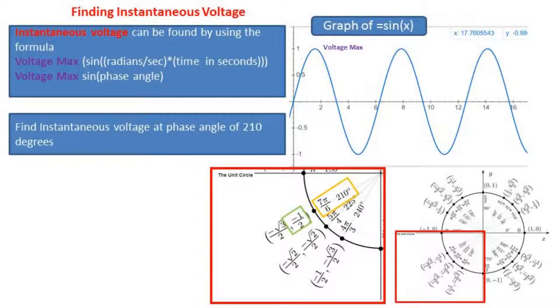For an example, let's find the instantaneous voltage at a phase angle of 210 degrees. Looking at the unit circle, we can see that we're in the third quadrant, and the sine of 210 degrees is negative one-half.